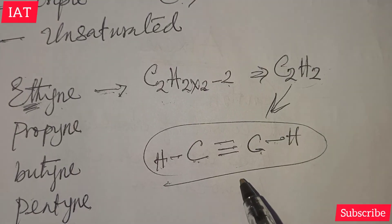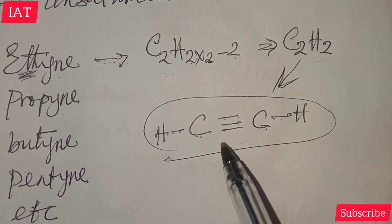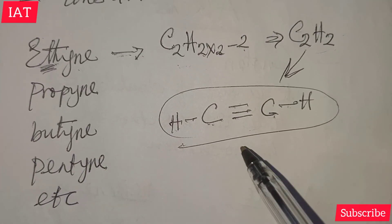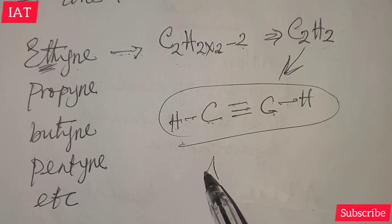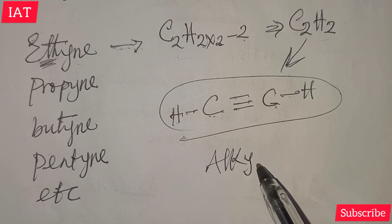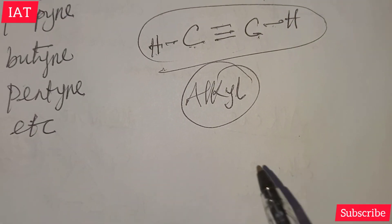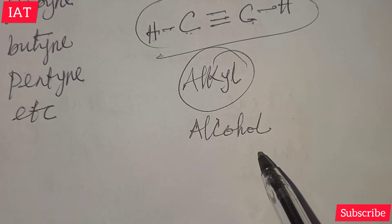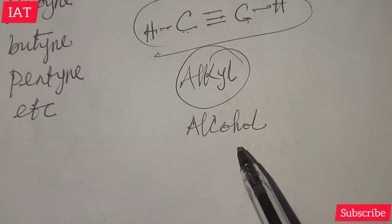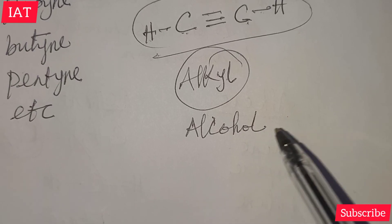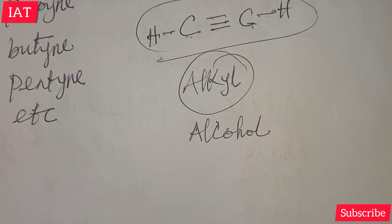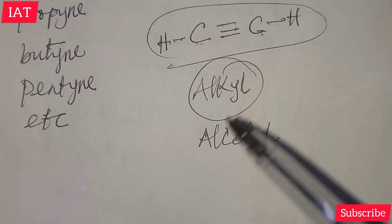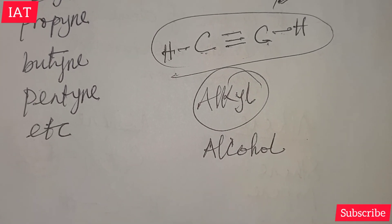In our next tutorial, we are going to see the skeletal structure of these homologous series. We will also look at some functional groups, starting with the alkyl group, then alcohol, aldehyde, ketone, carboxylic acid, and other functional groups. Alongside that, we will talk about IUPAC nomenclature of organic compounds, and we will conclude with isomerism.